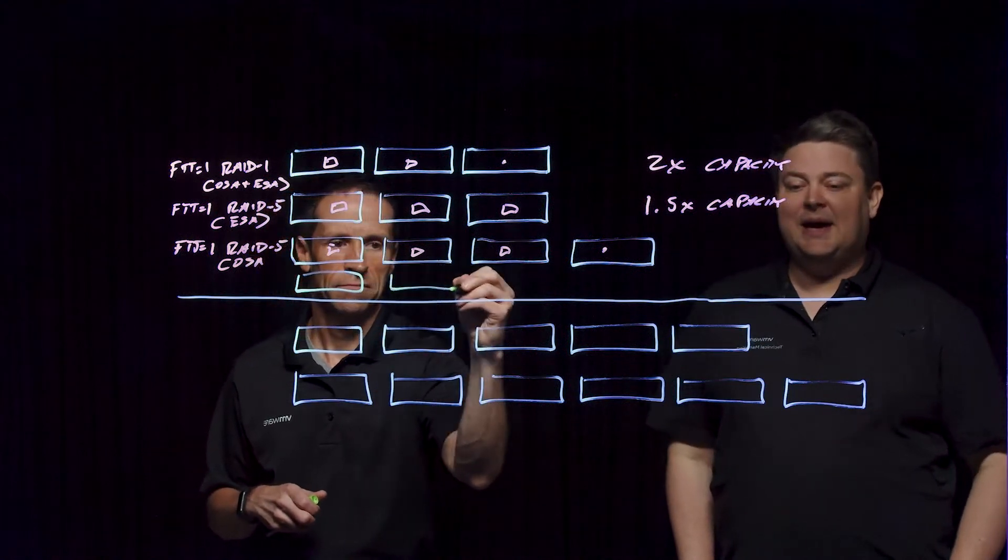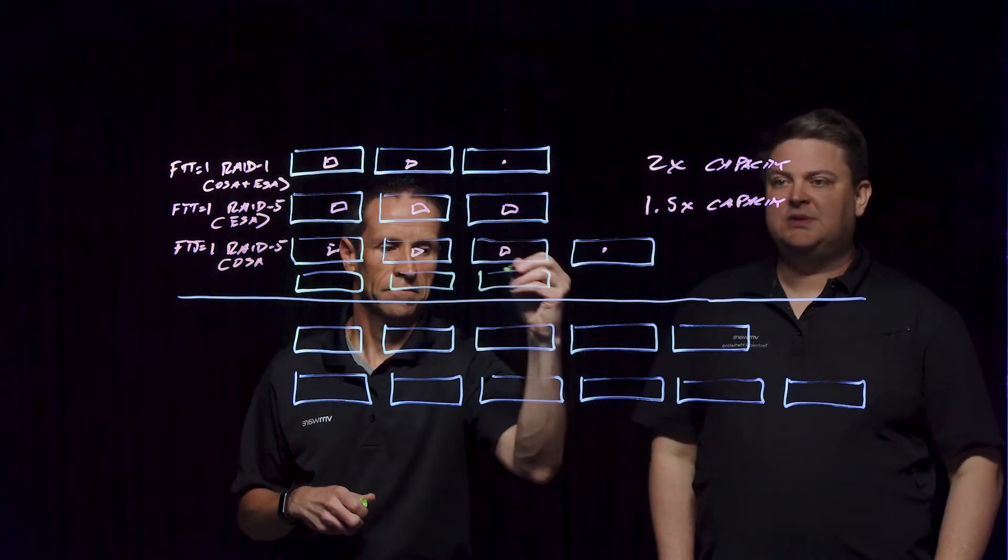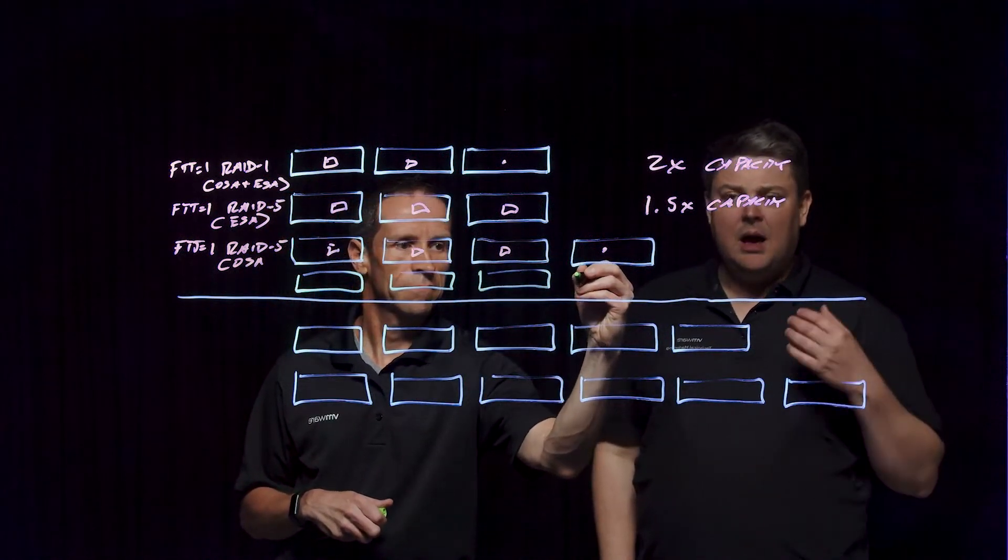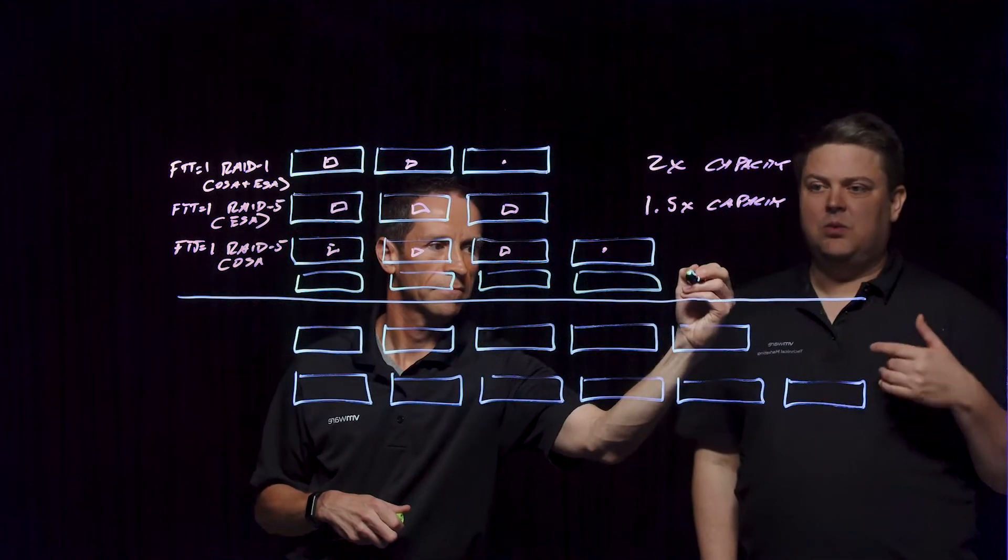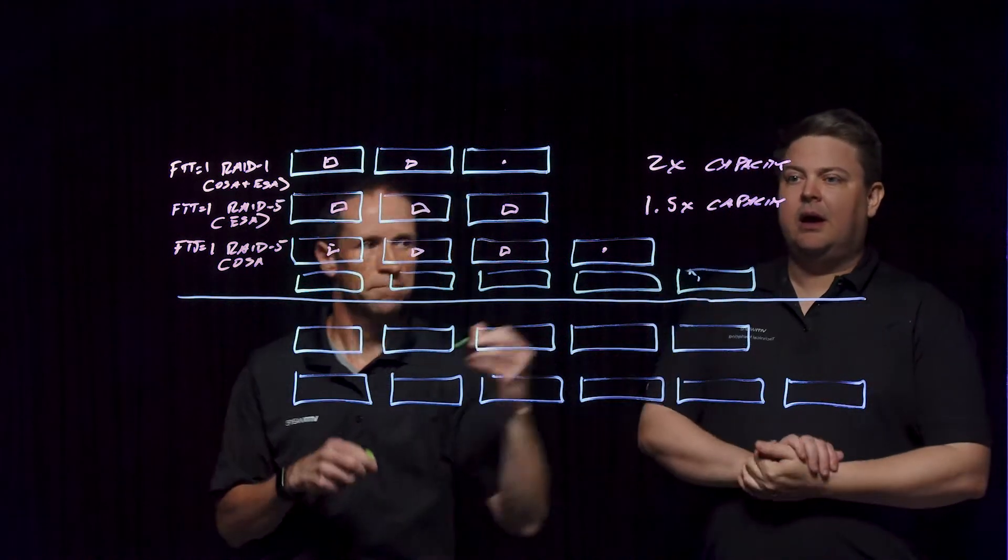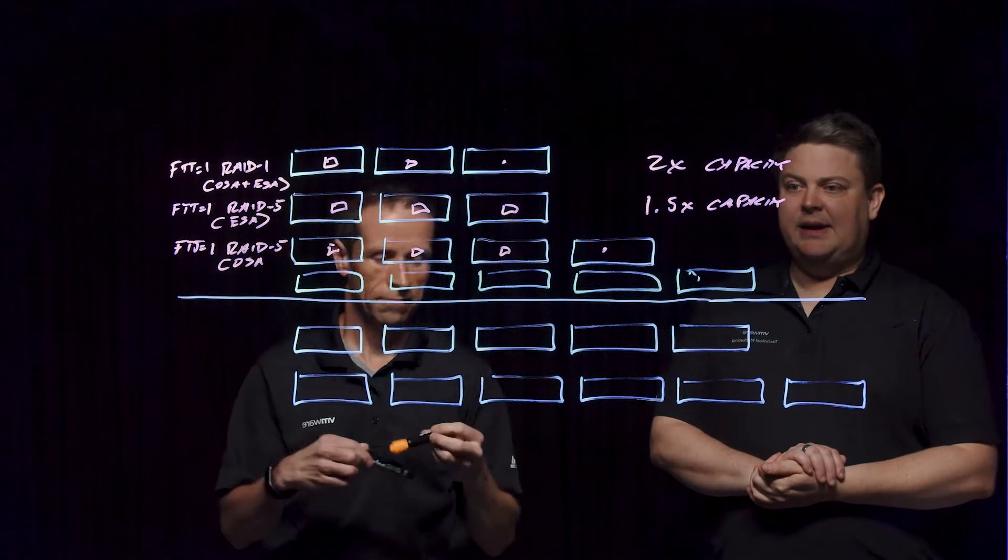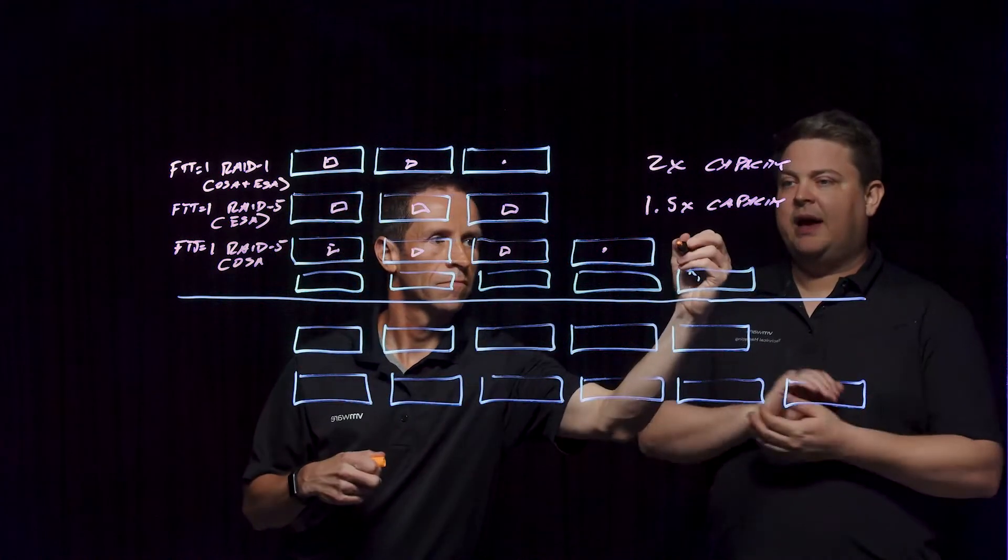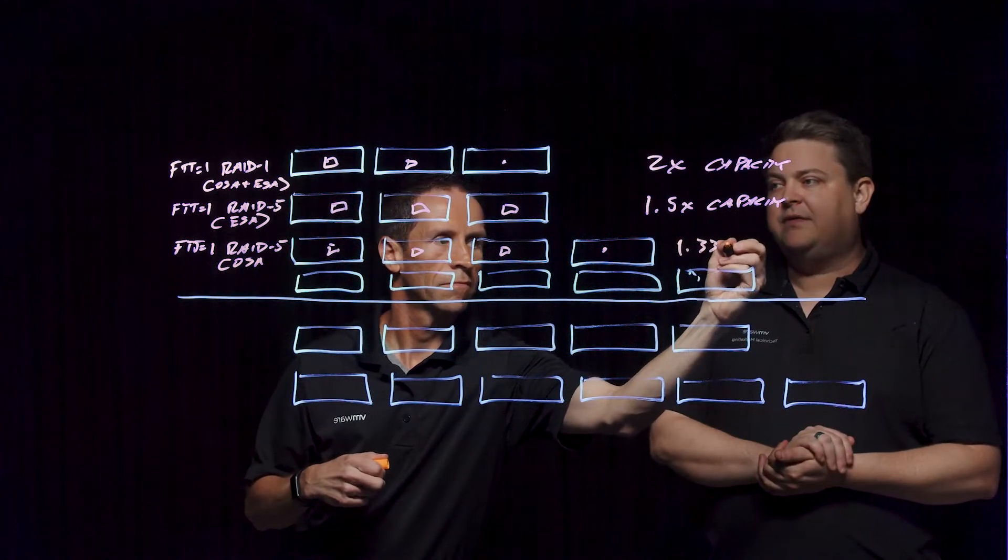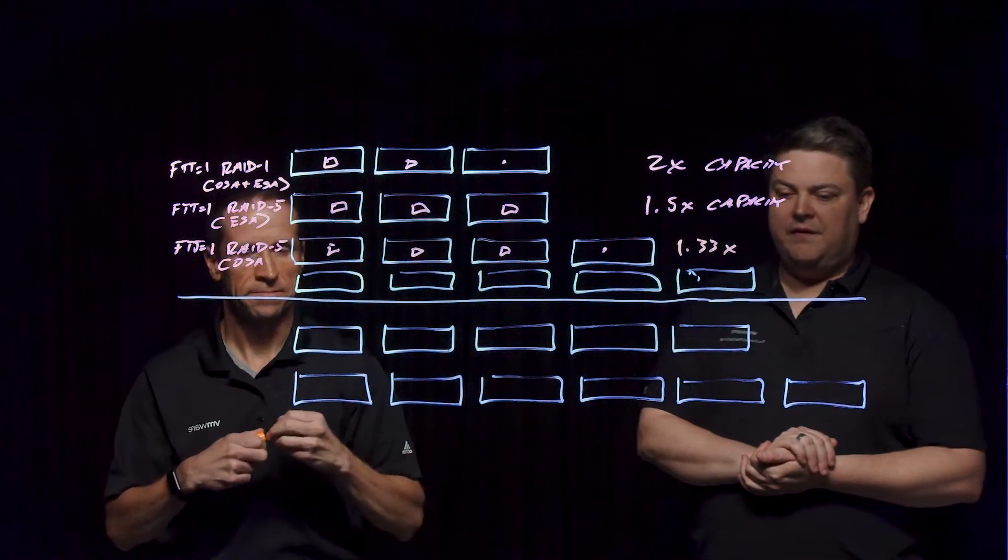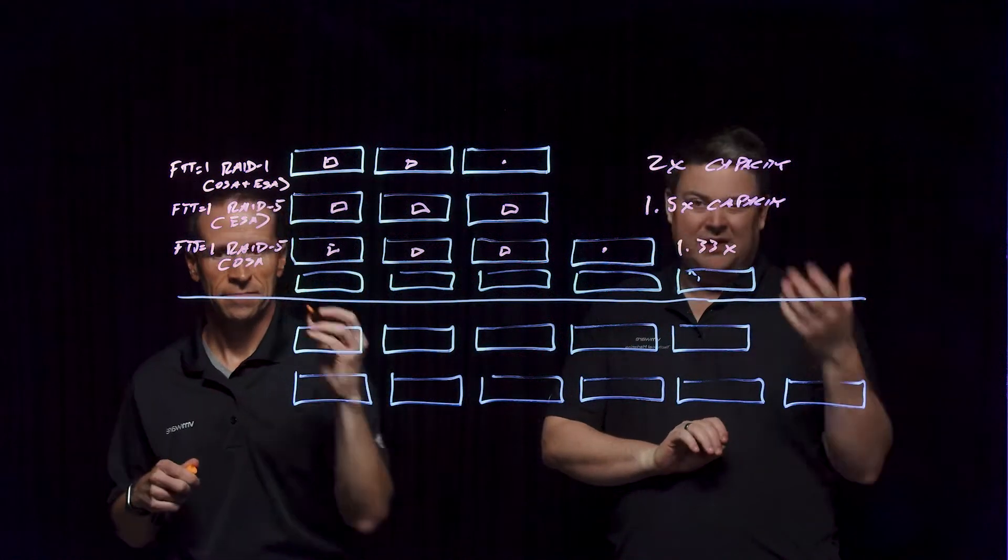From a capacity overhead, this specific design, your multiplier for capacity is a 1.33. And so because we've got that data, data, data parity, that's what we have. And so if you wanted to have the ability to tolerate a failure and things like that, you might have even added a fifth host.